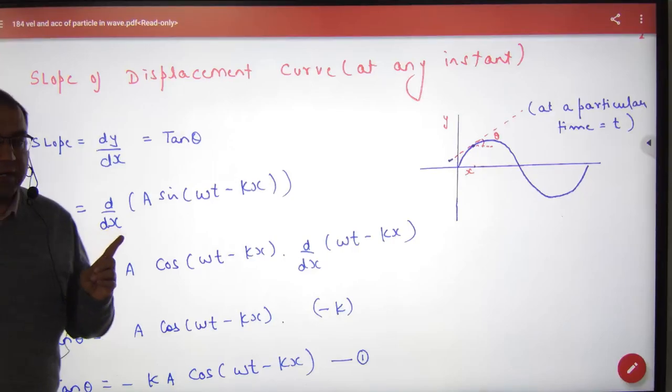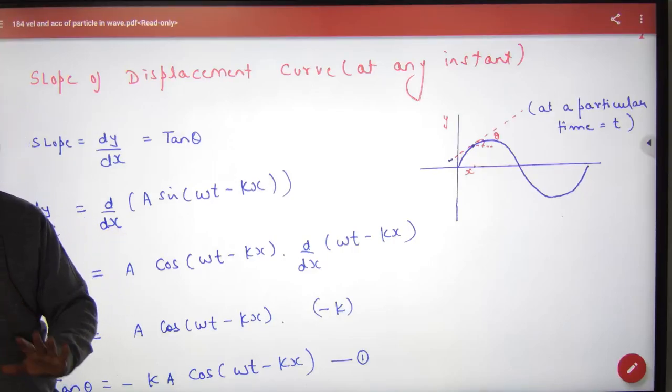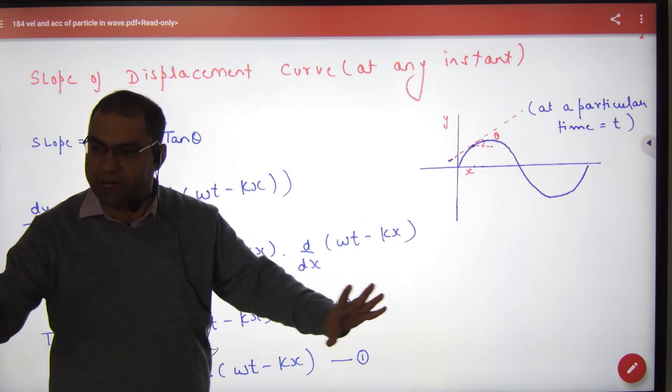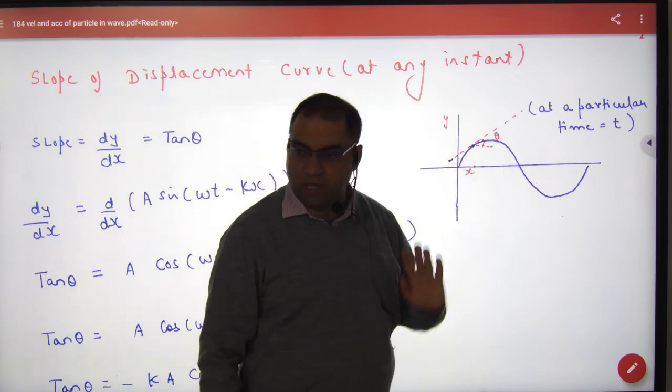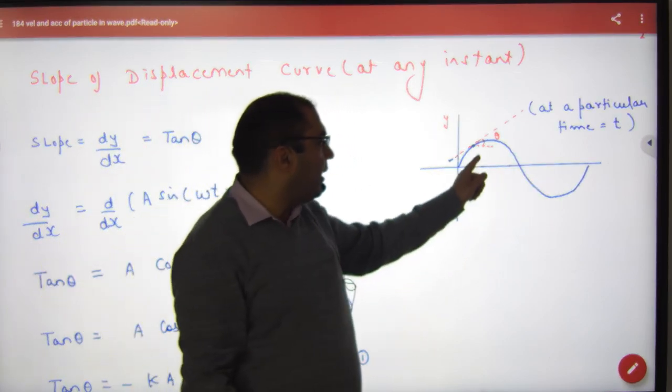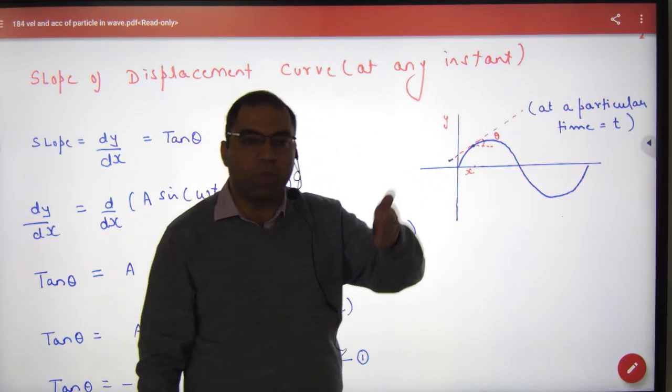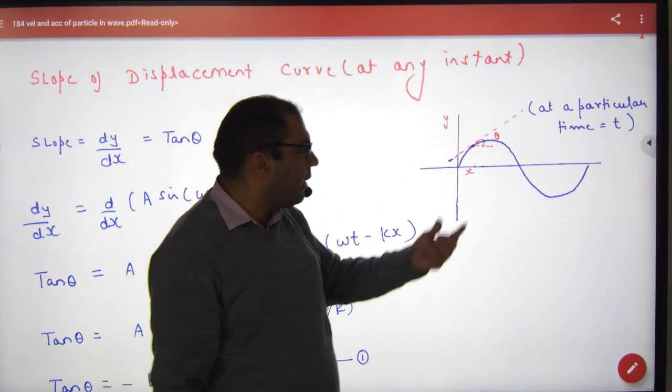Slope of displacement curve at any instant. Look, if you give a snapshot in the objective that this is a photo of a wave and it will give a point in it and you draw a tangent on it, what will you get from a tangent?